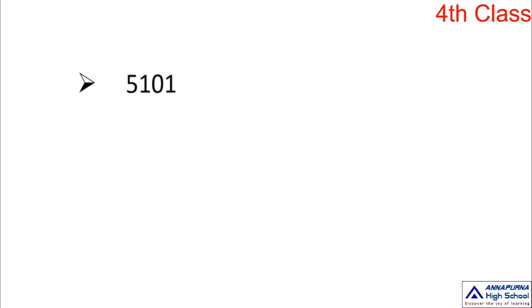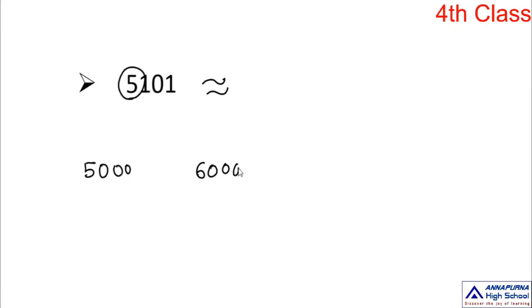Let's do more examples. First: 5,101. The digit in thousands place is 5. It lies between 5,000 and 6,000. The right-next digit is 1, which belongs to the small number family. So 5,101 is approximately equal to 5,000. Five thousand is the nearest thousand.